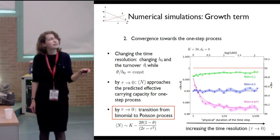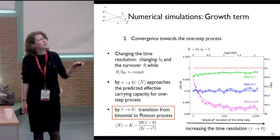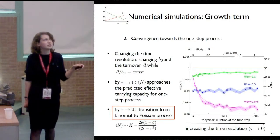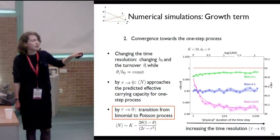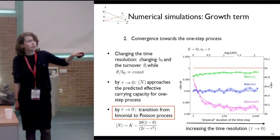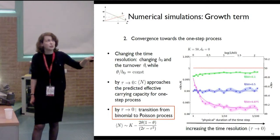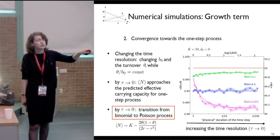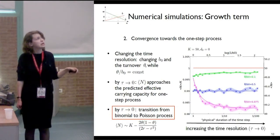The red line is the deterministic carrying capacity, and different colors represent different ratios of theta and b0. Crosses represent the mean values, shaded areas represent the standard error of the mean, and lines are the approximations. When we look at this approximation and let the turnover go to zero — in this region — this approximation is the same as the approximation for the one-step process. Since our data are represented by it, we conclude that our model approaches the continuous time one-step process when we decrease the time step, giving us a transition from the binomial process in discrete time towards the Poisson process by increasing the time resolution.